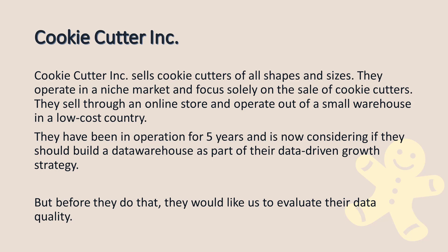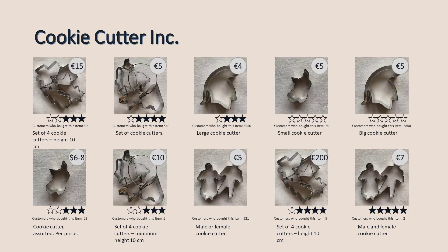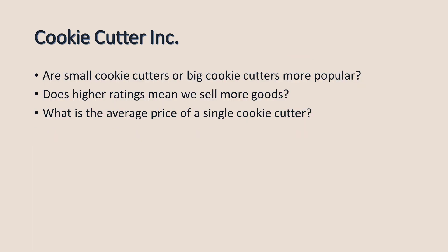Before dedicating any resources to that, they'd like us to look at the current data quality they have. Their website shows many different products — all cookie cutters — with different prices, ratings, customer purchase counts, and textual descriptions. Management is mainly interested in three questions: whether big or small cookie cutters are more popular, whether higher ratings lead to more sales, and what the average price of a single cookie cutter is.